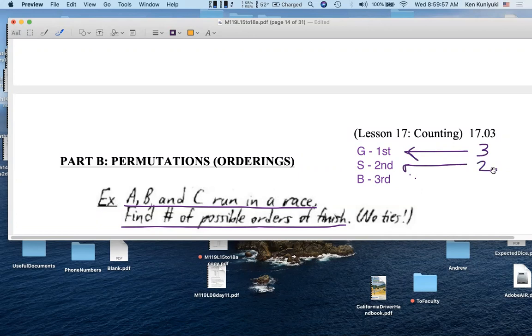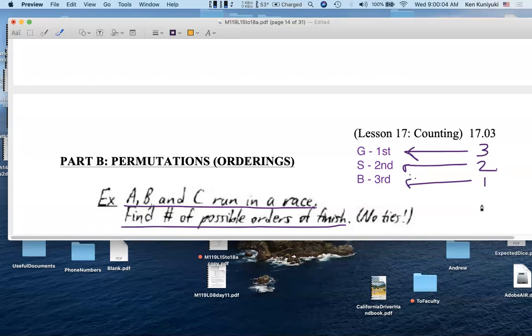And then, once we know the first two winners, we know that the bronze winner is forced. It's the last person. Here, everyone gets a medal.